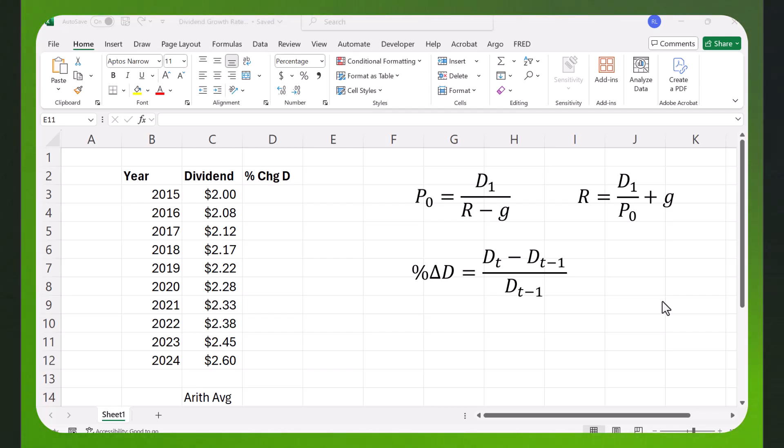Sometimes you have dividend information on what a company has paid over the years and you'd like to calculate the dividend growth rate. Why do you want to do that?